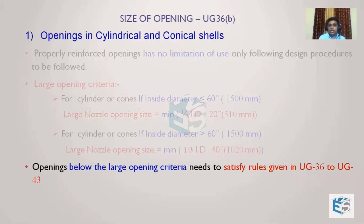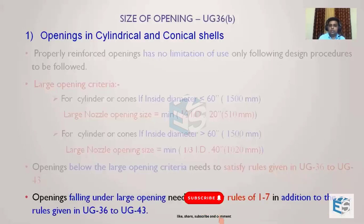Openings below the large opening criterion need to satisfy only UG-36 through UG-43. If it is a large opening, in addition to UG-36 through UG-43, we also need to satisfy the additional requirements of Mandatory Appendix 1-7, which is a separate procedure specifically for large openings.